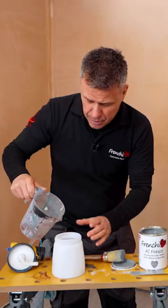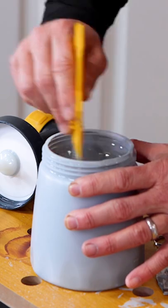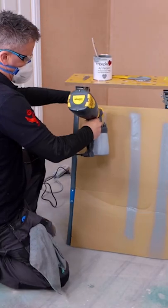If you're using a paint sprayer you will need to dilute the paint down by about 10%. Test this on a piece of cardboard first then you're ready to paint.